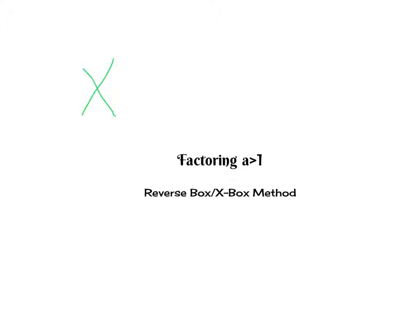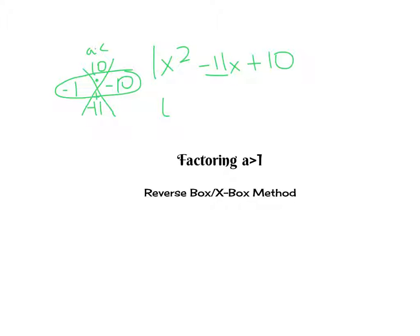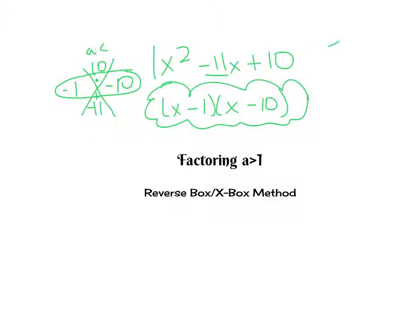An example of that would be when you have x squared minus 11x plus 10. The top is always a times c, so it's 1 times 10, which is 10. The b value is negative 11. So what you want to know is what multiplies to 10 that adds to negative 11. In this case, this is negative 1 and negative 10. Negative 1 times negative 10 is positive 10, and negative 1 plus negative 10 is negative 11. Then you would take these two numbers and write the factors: x minus 1, x minus 10. So you figured out that this is the factor of this trinomial.